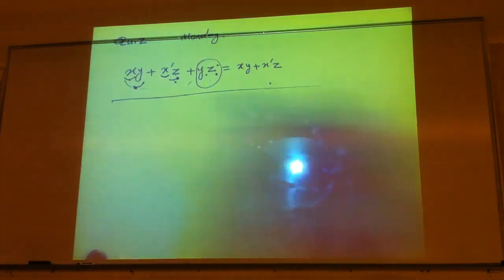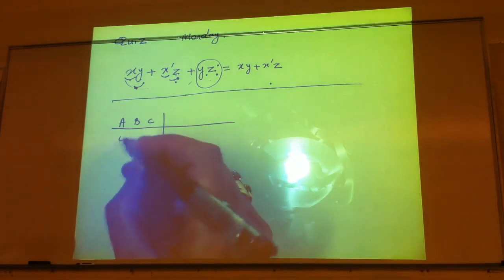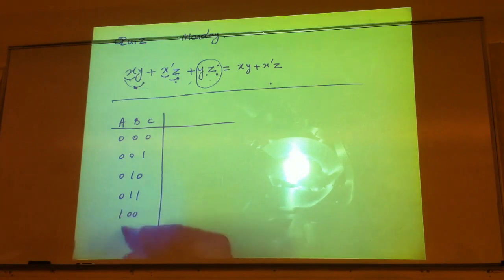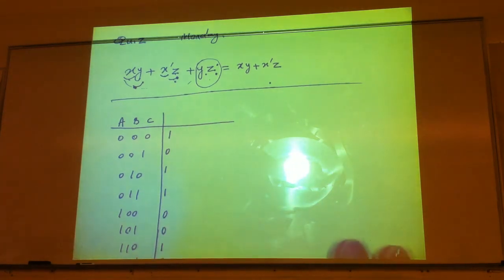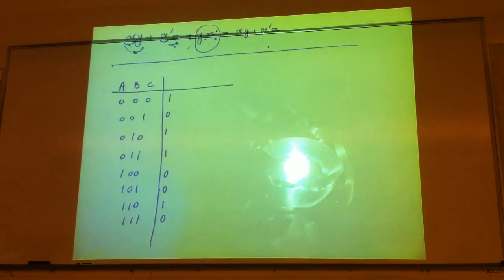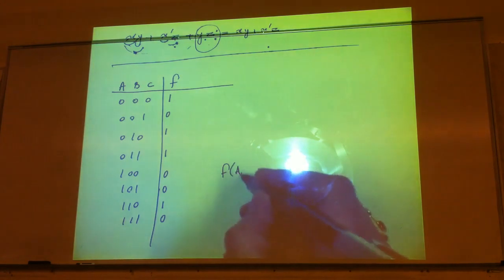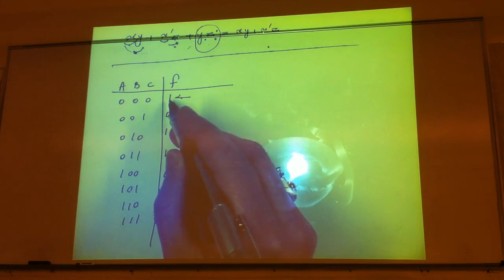Let's make up an example and take a look. So we have a, b, c — this is our function. We'll define it with a truth table. So from this, we want to write the min-term expansion and max-term expansion — the sum-of-products form and product-of-sums form. Our function F(a, b, c): in order to write the min terms, we want the function to be 1.